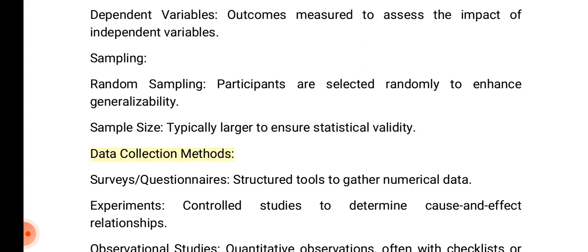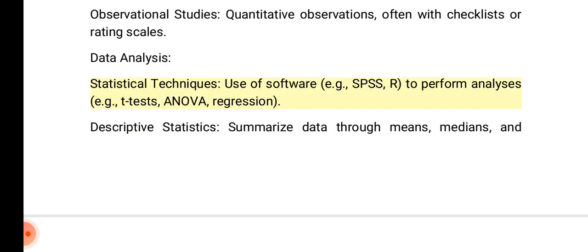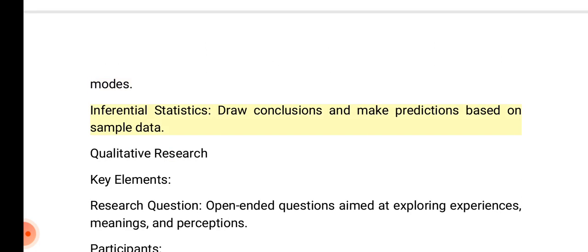Quantitative data collection methods: surveys and questionnaires are structured tools to gather numerical data; experiments are controlled studies to determine cause and effect; observational studies involve quantitative observations with checklists or rating scales. Data analysis: statistical techniques using software such as SPSS to perform analyses including t-tests, ANOVA, and regression; descriptive statistics summarize data through means, medians, and modes; inferential statistics draw conclusions and make predictions based on sample data.